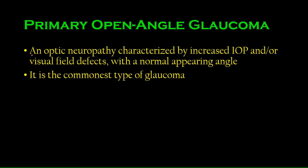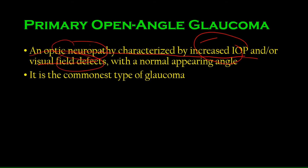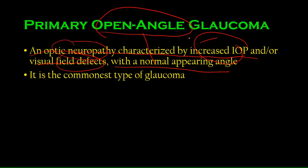Primary open-angle glaucoma is an optic neuropathy characterized by increased intraocular pressure and visual defects. This definition applies to all glaucomas — except for the 'normal appearing angle' part, which refers to its open-angle nature. It's an open-angle glaucoma.